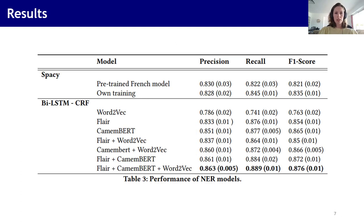To evaluate our model, we computed precision, recall, and F1 score, and compared the proposed model to the SpaCy architecture and different combinations of embeddings. We split the dataset into ten folds and evaluated our pipelines through cross-validation. We first noted that the BLSTM-CRF outperforms the SpaCy architecture. We can also see that the embeddings, like Flair and CamemBERT, really increase the performance. We also added Word2Vec because the results are more robust with it.